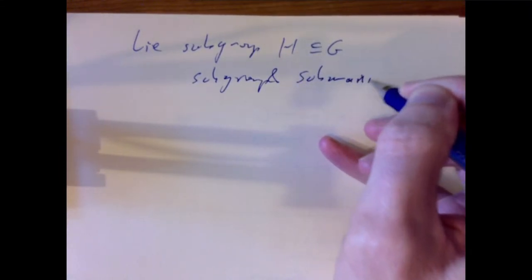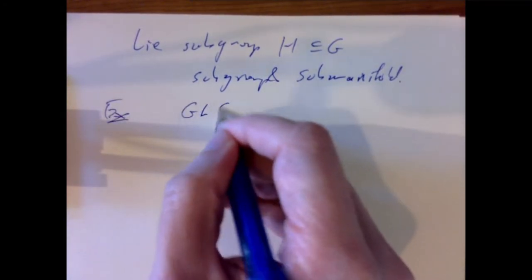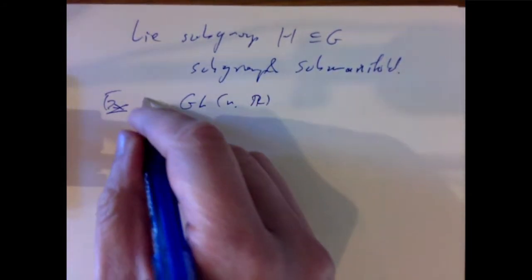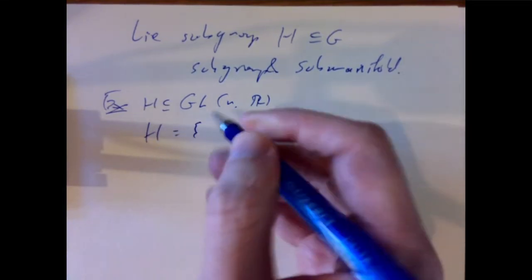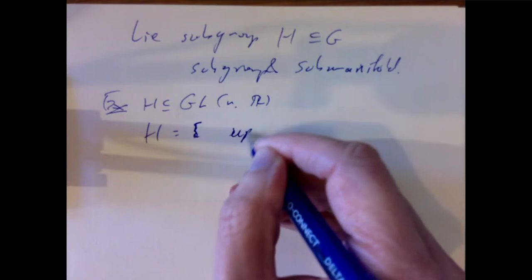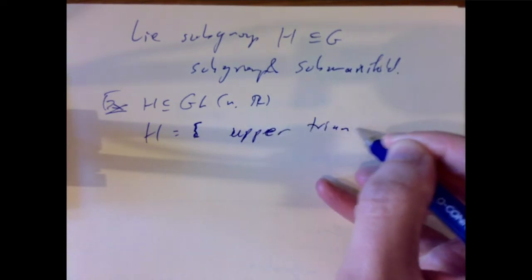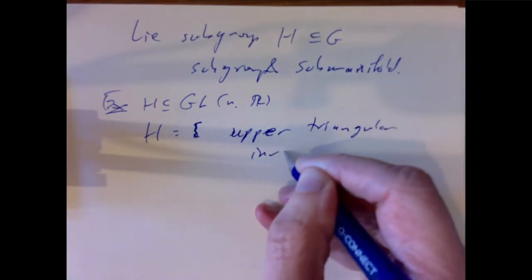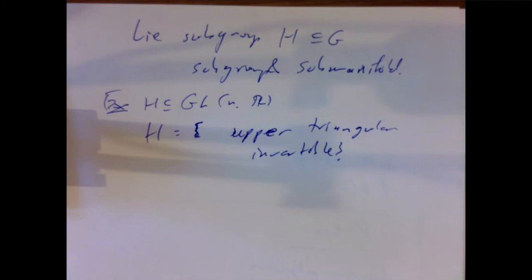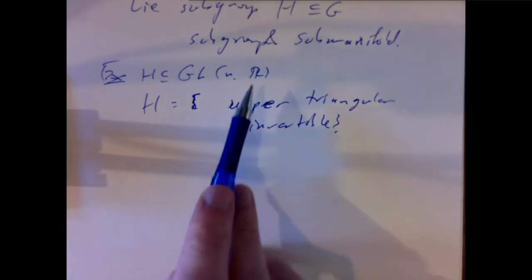A Lie subgroup H of some Lie group G means a subgroup which is also, as a set of points inside G, a submanifold. An example would be, if you looked inside the n by n invertible matrices at H being the set of all upper triangular invertible matrices. That's a subgroup and also a submanifold, because you're simply setting certain entries of the matrix to be zero — given by a linear equation.